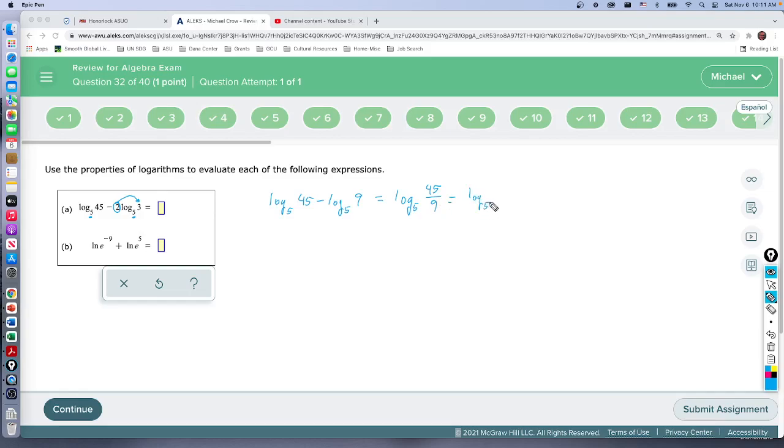45 divided by 9 is 5, so there's log base 5 of 5. And whenever the base is the same as the input, the exponent is the answer. So this is 5 to the first power.